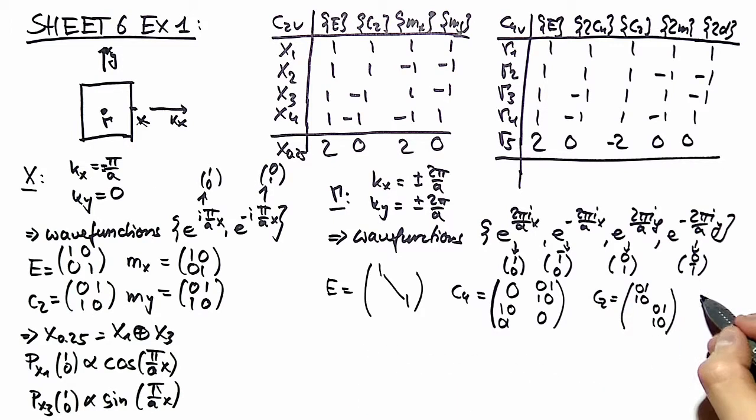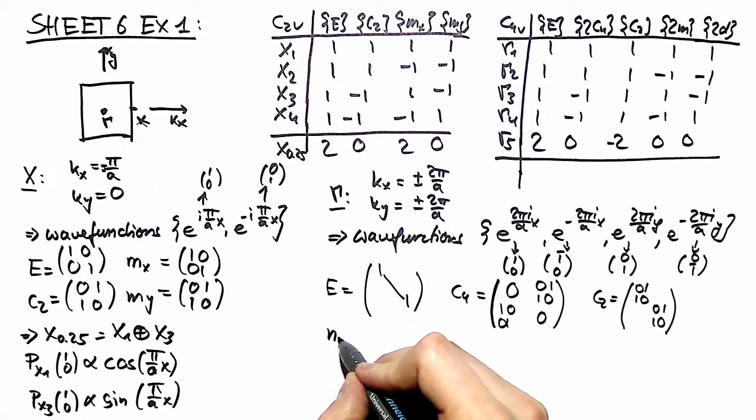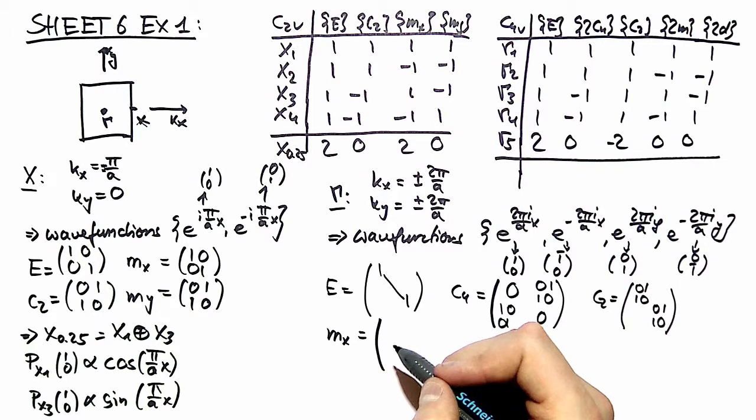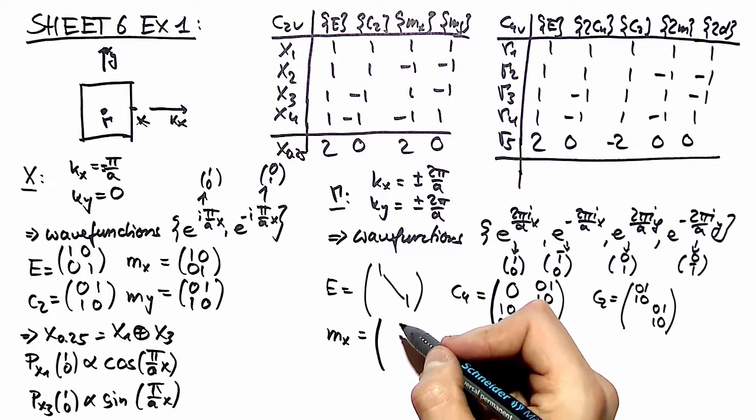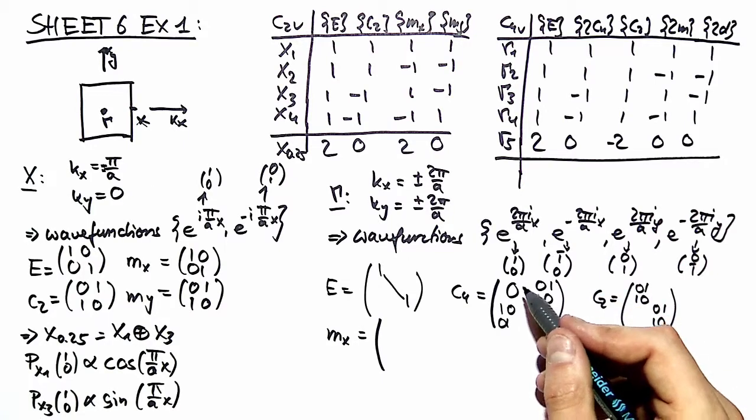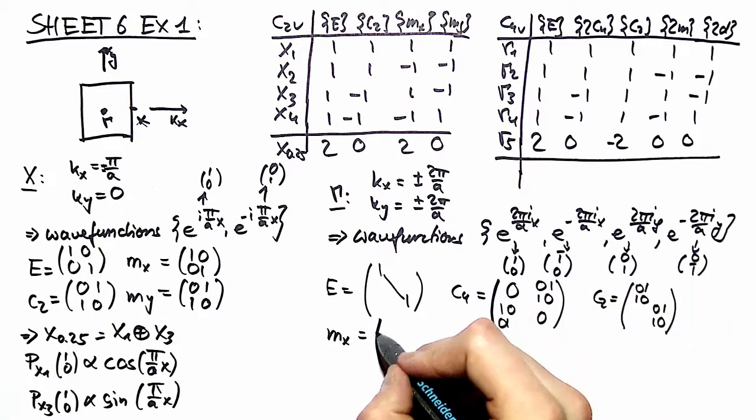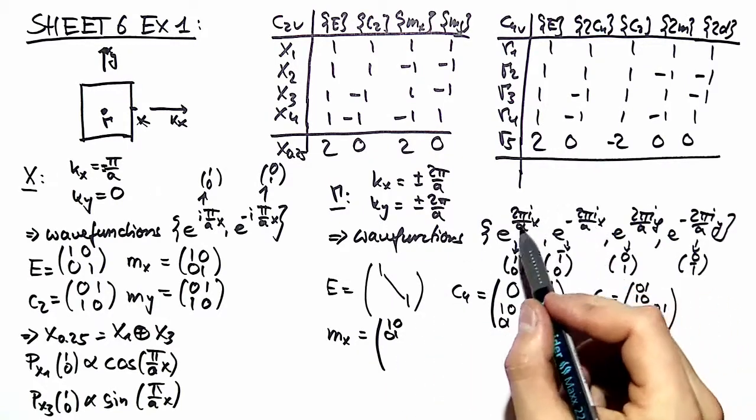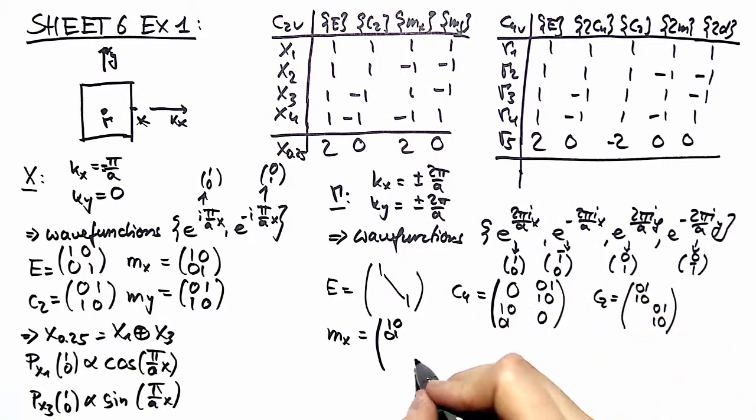And the reflection plane, we have two different reflection planes. We have the reflection at our axis. We only write down one of these matrices because we want to determine the trace, and the trace is a class function. Therefore we don't have to investigate the other matrices.